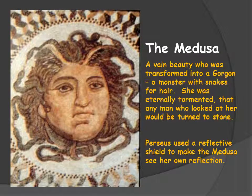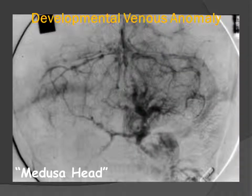It is the morphologic appearance of smaller veins collecting on a dominant transcortical trunk that is highly characteristic of the developmental venous anomaly. Classically, the DVA or venous angioma was described as having a medusa head appearance. The medusa was a vain beauty who was transformed into a gorgon, a monster with snakes for hair. She was transformed because she was so vain, but was eternally tormented that any man who looked at her would be turned to stone.